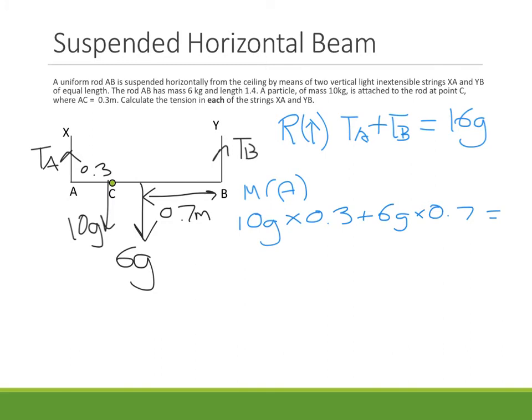That's going to be equal to my anticlockwise moments, and the only place that's going to make it anticlockwise is this tension here. So that's going to be TB, and it's a long way from A. It's the full length of the beam, which is 1.4.